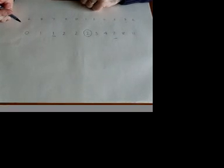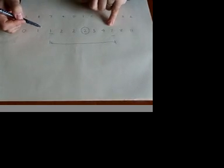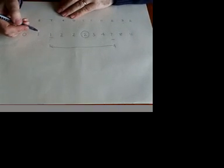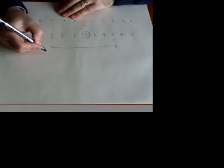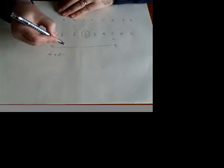To find the interquartile range, that is this along here. So it will be the number 7 take away 1, the upper quartile take away the lower quartile. So the interquartile range, in this case, will be 6. So we have the median is 2.